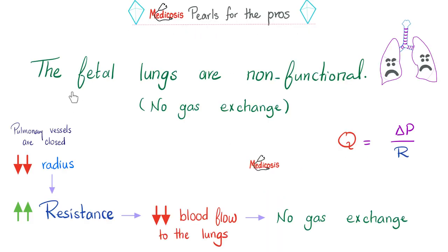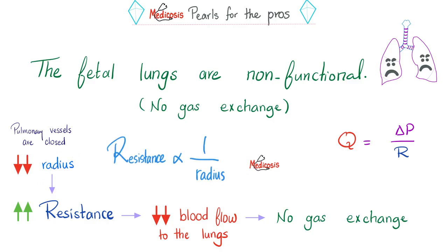Medicosis pearls for the pros: the fetal lungs are non-functioning — no gas exchange. Think of this lung as a thick, dense, dark place in the fetus. The vessels are closed, so the radius is very low, and according to physics when the radius goes down the resistance goes up. So these pulmonary vessels have very high resistance. According to Ohm's law, when resistance goes up blood flow goes down. Since blood cannot go from the baby's heart to the baby's lung, there is no gas exchange.